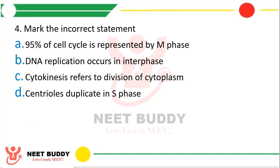Question 4: Mark the incorrect statement. Option A: 95% of cell cycle is represented by M phase. Option B: DNA replication occurs in interphase. Option C: Cytokinesis refers to division of cytoplasm. Option D: Centriole duplicates in S phase. The correct answer is Option A. The statement that 95% of cell cycle is represented by M phase is incorrect. In fact, 95% of cell cycle is represented by interphase, and the M phase is very short.